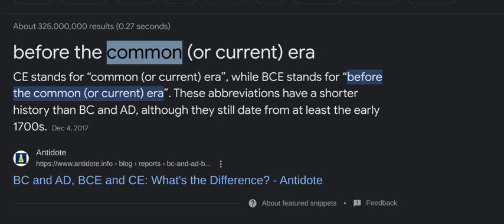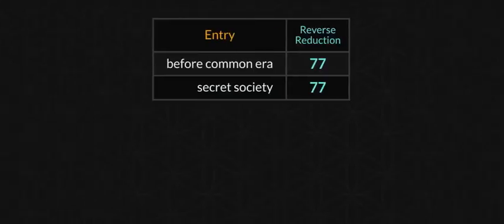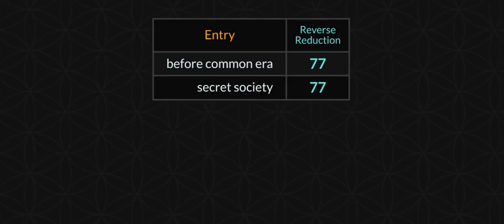Also the other way — 'before the common era,' BCE. Before common era — we're talking about gematria here. Don't you think it's interesting that 'before common era' syncs up with 'secret society'? We see how these secret societies operate with the gematria — with the skull and bones this year in 2023 it's just off the chain ridiculous.